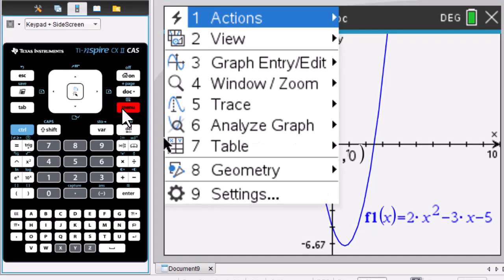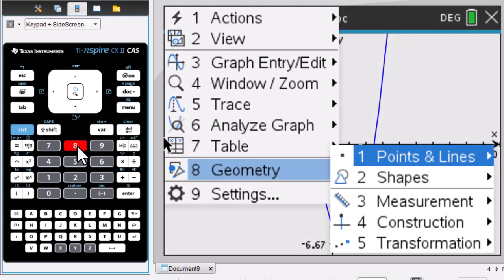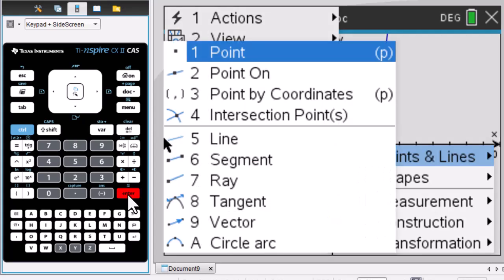We go to menu again. Go to 8, enter. Go to 8 again, tangent.